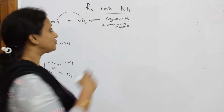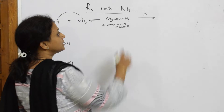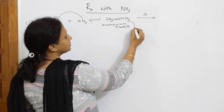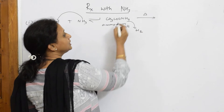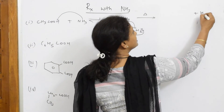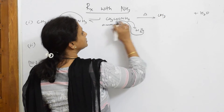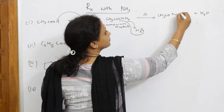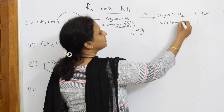Now, this ammonium acetate when further heated — not strong heating, just mild heating — two hydrogens from the ammonium and one oxygen from the carboxylate come out as water. After water leaves, what is remaining? You have CH3, CO, and the NH2 group. This compound is called acetamide.